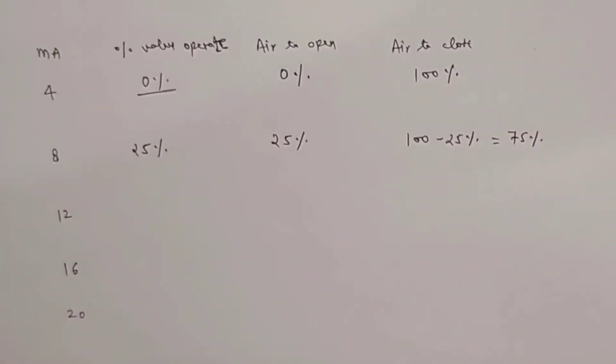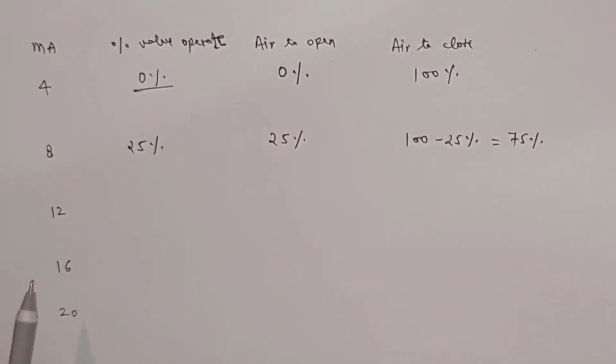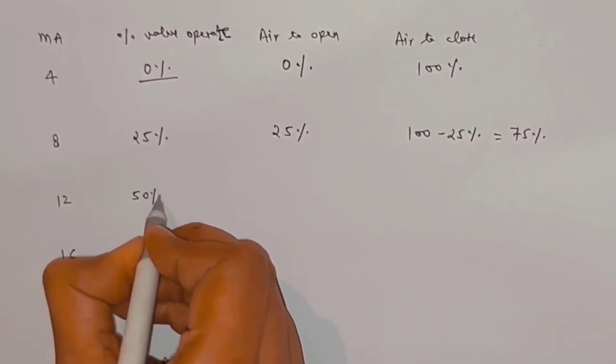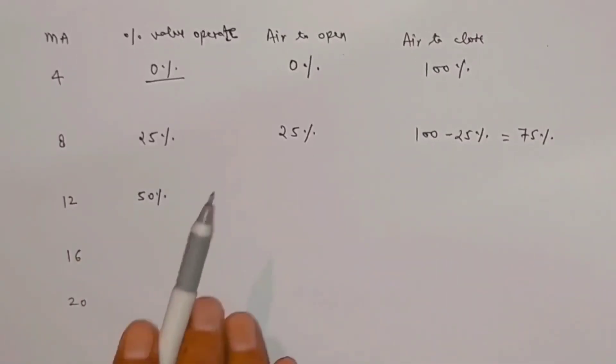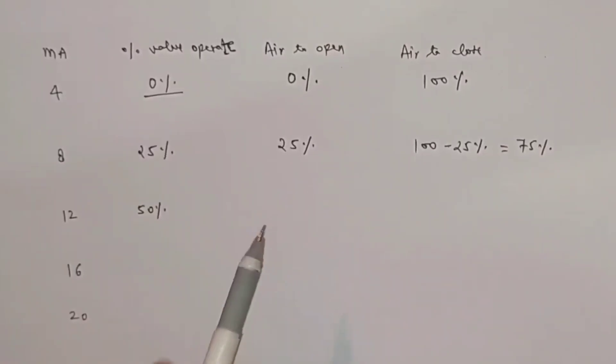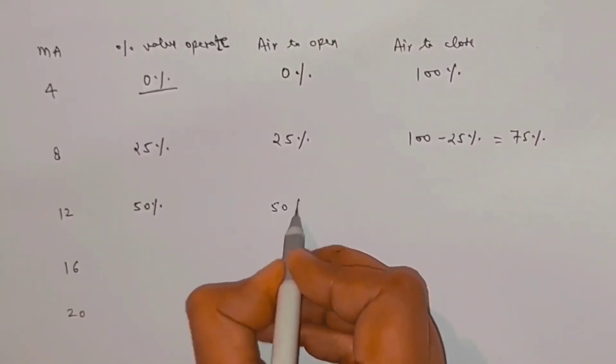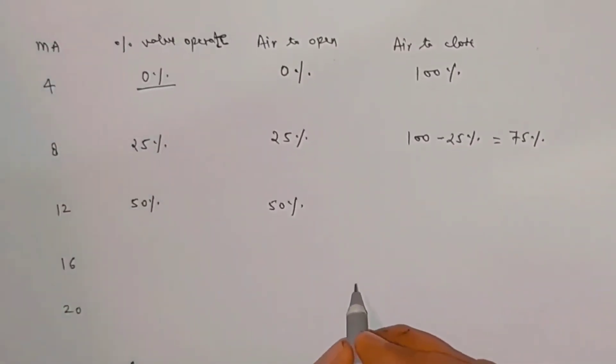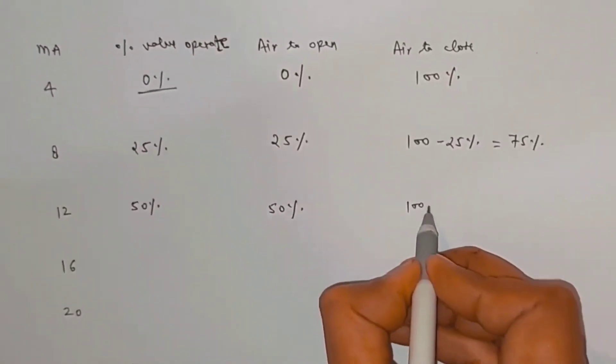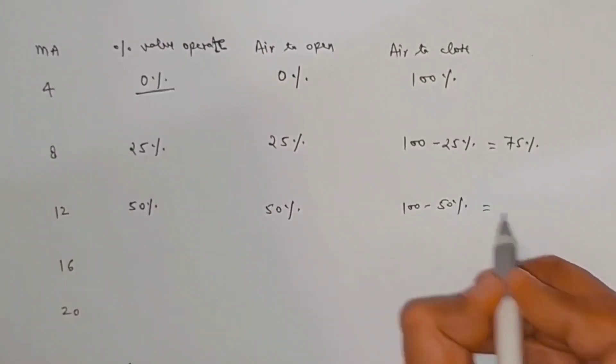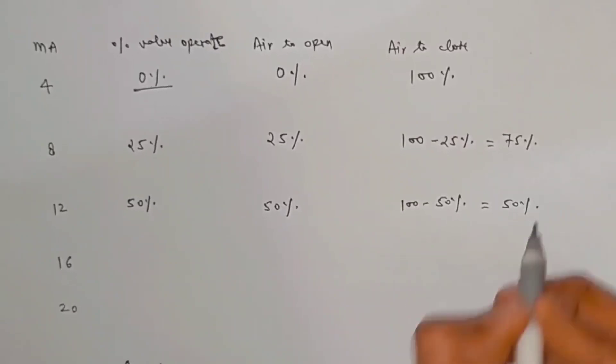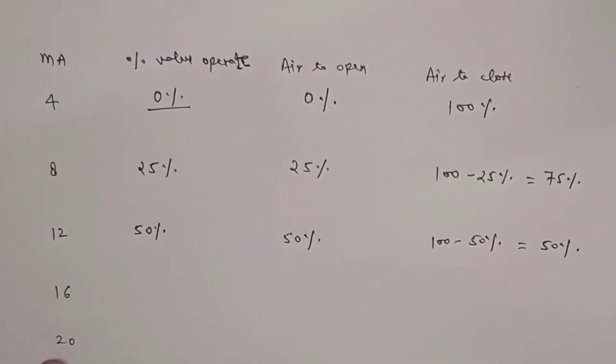Now at 12 milliamp pairs signal, it will be 50%. So the opening percentage of air to open control valve is 50%. And the opening of air to close control valve will be 100 minus 50%, so it will become 50%.